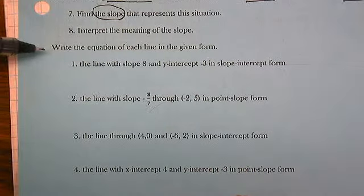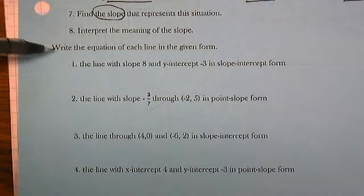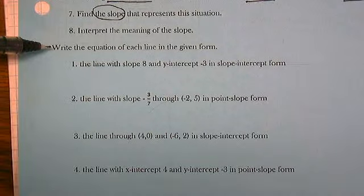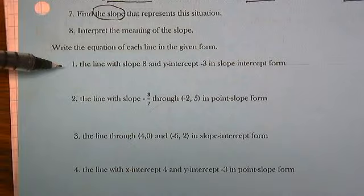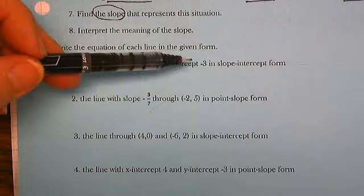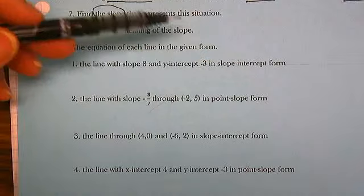Geometry review continued. Write the equation of each line in the given form. The line with slope 8 and y-intercept negative 3 in slope-intercept form.